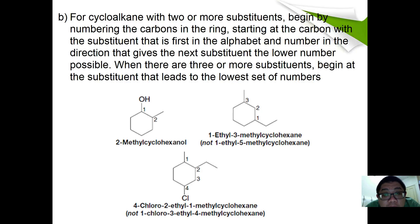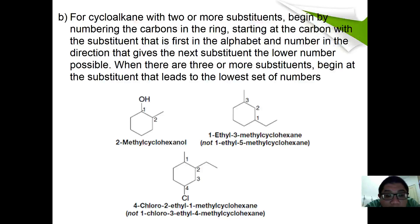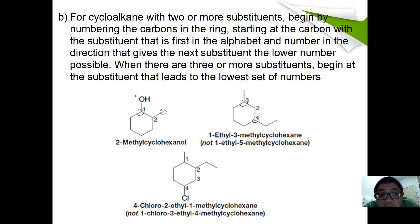When there are two or more substituents, numbering starts from the carbon bearing the substituent that comes first alphabetically, in the direction that gives the next substituent the lowest possible number. For example: if there is a methyl and an ethyl group, we name it 1-ethyl-3-methylcyclohexane rather than 3-ethyl-1-methyl. Another example with chloro gives 4-chloro-2-ethyl-1-methylcyclohexane, which gives the smallest set of numbers.